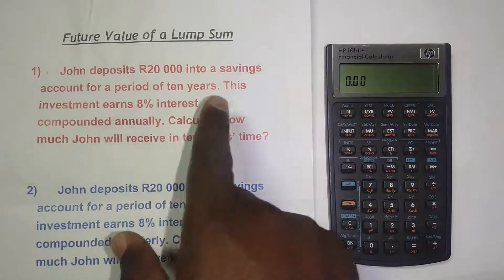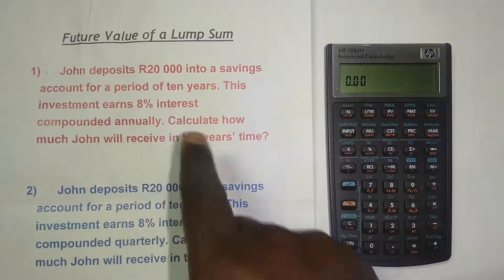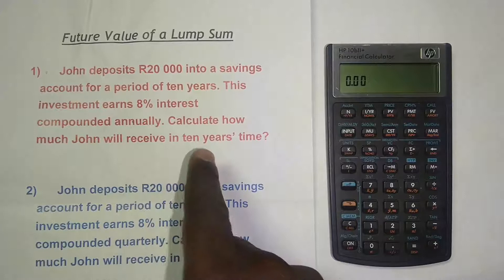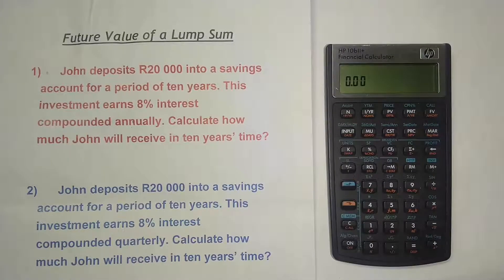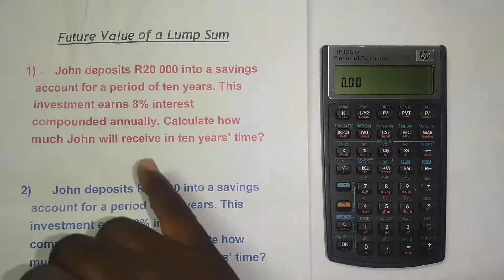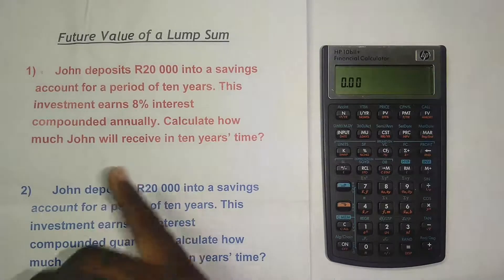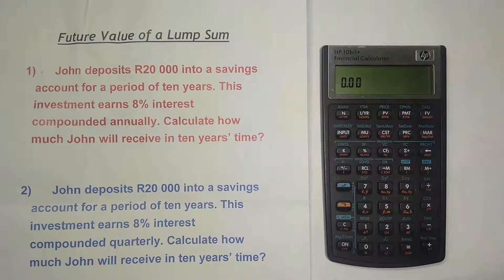The first example: John deposits 20,000 rand into a savings account for a period of 10 years. This investment earns 8% interest compounded annually. Calculate how much he will receive in 10 years time. The first thing we pay attention to is the compounding. This financial calculator by default is compounded 12 times per year, meaning monthly. Since this calculation requires annual compounding, we need to change that setting.